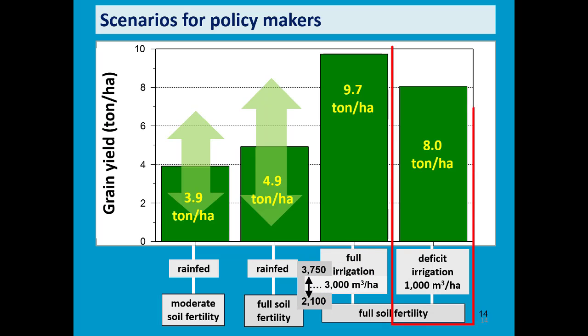If irrigation water is a constraint, you can also check with AquaCrop the possibilities of deficit irrigation. With only one-third of the amount of water, you can still get 8 tons per hectare, and the yield will be rather stable.